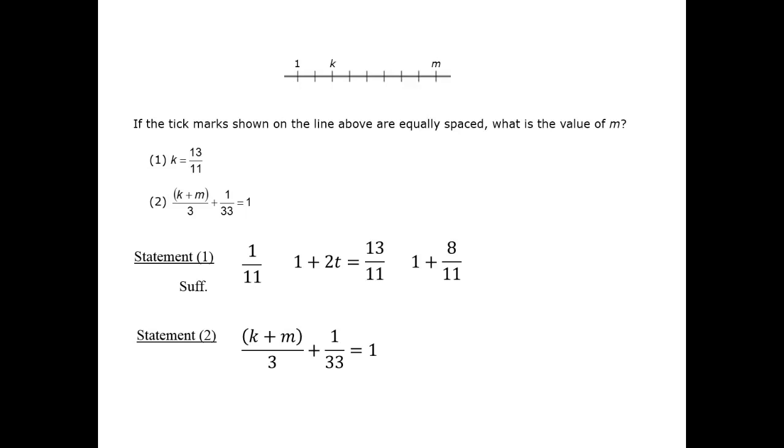Since t is the value of a tick mark, once again we have that k is 1 plus 2t, since it's two tick marks past 1. Similarly, we can write m equals 1 plus 8t, since m is 8 tick marks past 1.